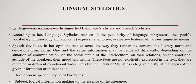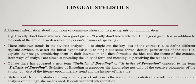Information in speech may be of two types: first, subject-logical information making up the essence of the utterance; and second, additional information about conditions of communication and the participants of communication. For example, in addition to the content, the author also describes the person's manner of speaking, which is not quite literate.